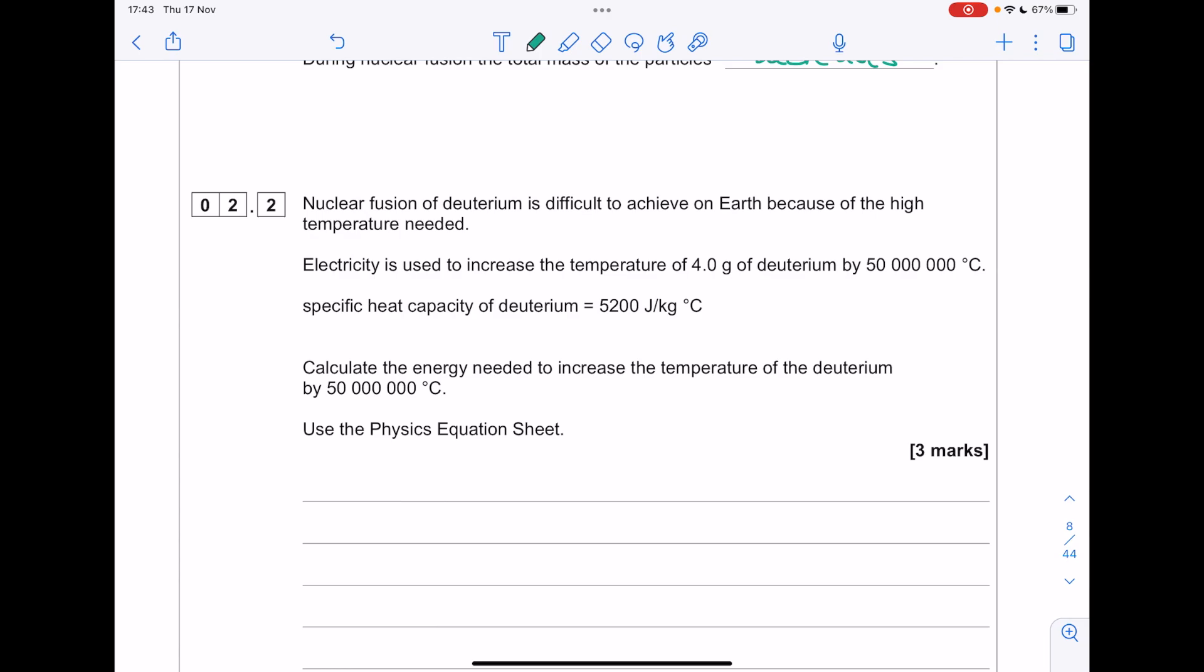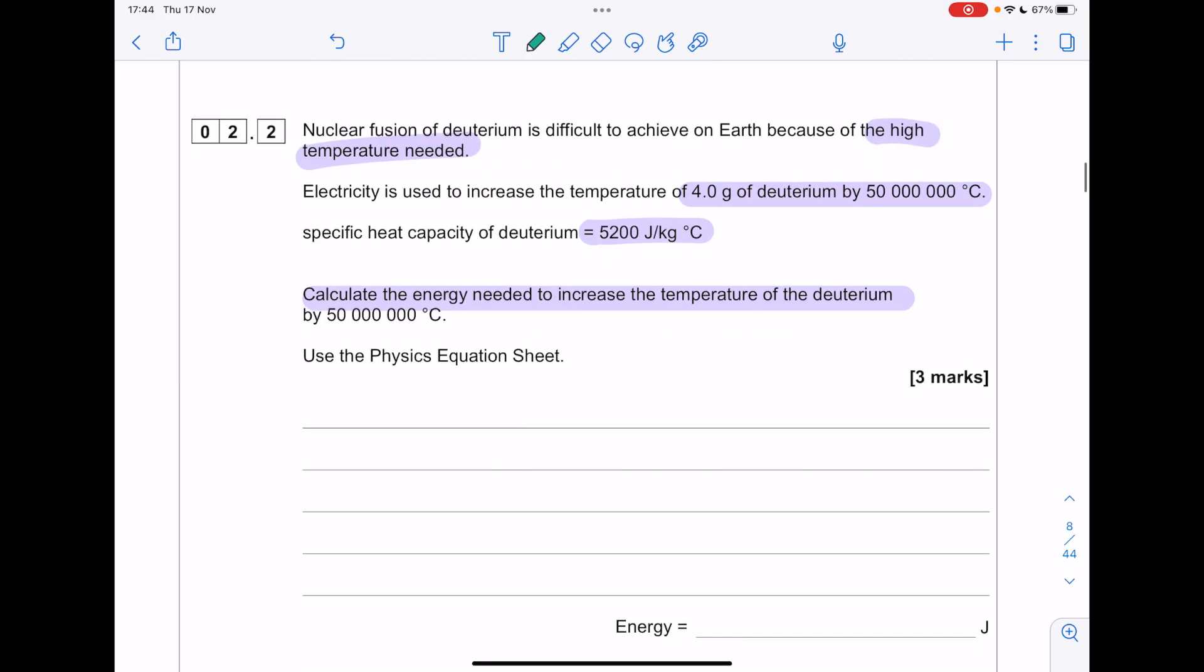Nuclear fusion of deuterium is difficult to achieve on Earth because of the high temperature needed. Electricity is used to increase the temperature of 4 grams of deuterium by 50 million Celsius. Here's the specific heat capacity. Calculate the energy needed. So the equation is E equals MC delta T. The mass is 4 grams. We need the standard SI unit, so divide 4 by 1,000. Our specific heat capacity is 5,200. Temperature change is 50 million. Big number.